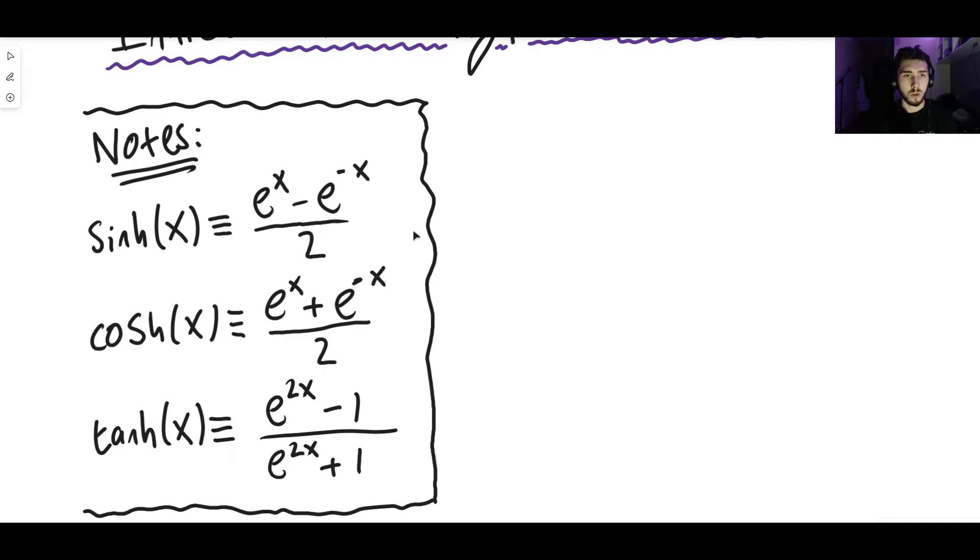So the first thing that we do, by the way, is we define sinh and cosh to be these things. We just define them to be like that. Tanh comes from doing sinh divided by cosh equals tanh, because you'll notice, and we'll talk about this in future videos, all of the trigonometric identities also hold, with some exceptions that we'll talk about, but they more or less all hold for the hyperbolic functions.